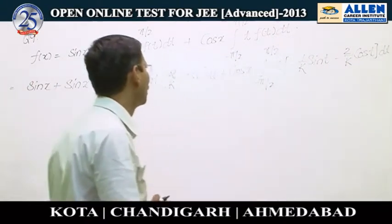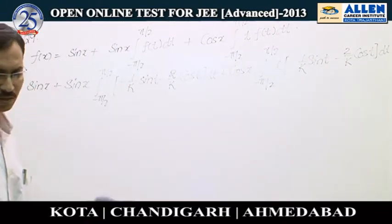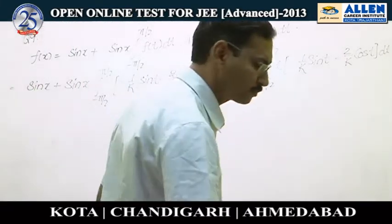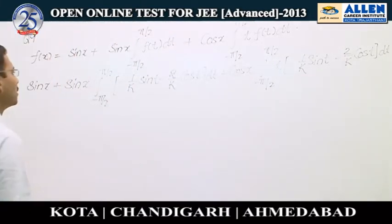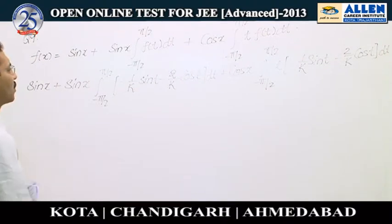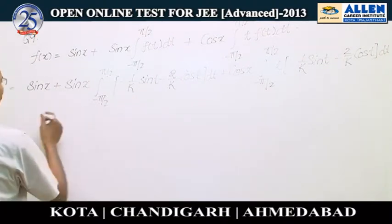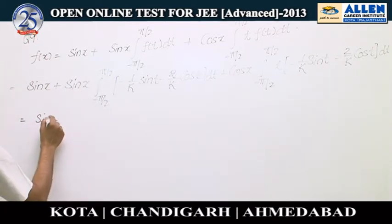Now we will integrate the possible terms. As we can see, it is minus 1 upon k times sin t over here, and sin t is an odd function over the interval -π/2 to π/2.